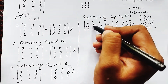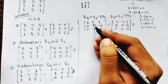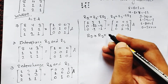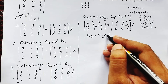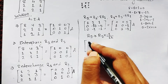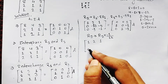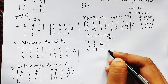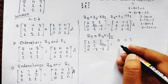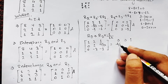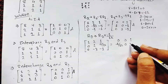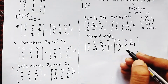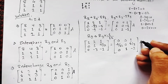Our next target is to make the pivot in row 2 equal to unity. If we multiply row 2 by −1/12, the element −12 becomes 1. So the operation is R2 → R2 × (−1/12). We perform this on both sides of the augmented matrix, keeping R1 and R3 as they are.